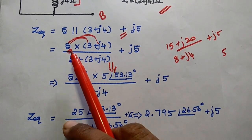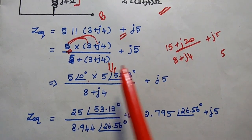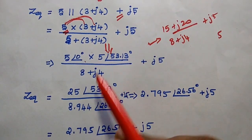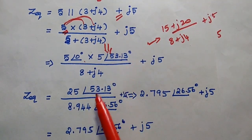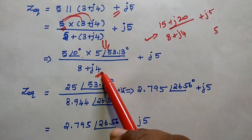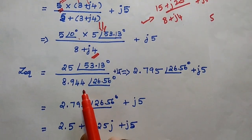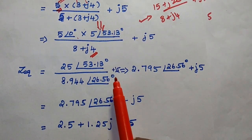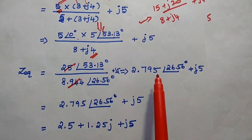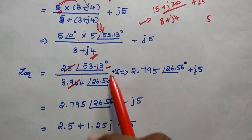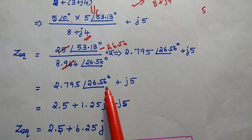We can use polar forms: 5∠0° multiplied by 5∠53.13° gives 25∠53.13° in the numerator. The denominator corresponds to 8.944∠26.56°, which we already calculated. Dividing the magnitudes: 25 divided by 8.944 gives 2.795. For the angle, 53.13° minus 26.56° gives 26.56°. So the parallel combination is 2.795∠26.56°.